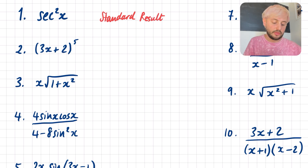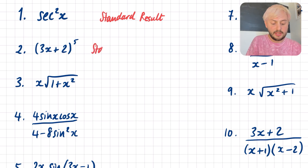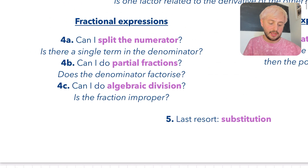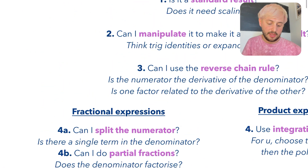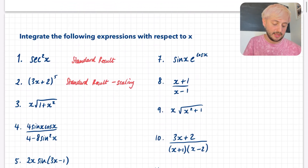Question 2: (3x + 2)⁵. There's no product or anything going on here — this is absolutely going to be a standard result type question. However, what you will need to think about is that you will need to do some scaling. So number 2 is going to need some scaling.